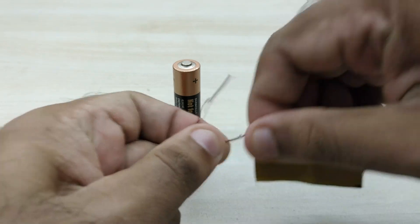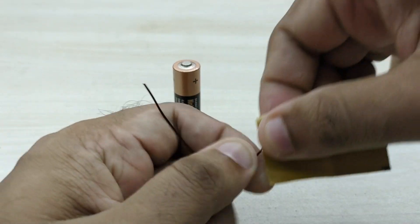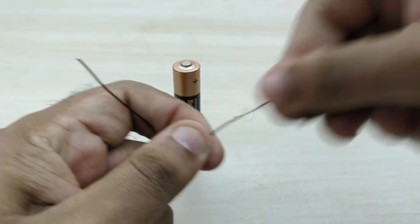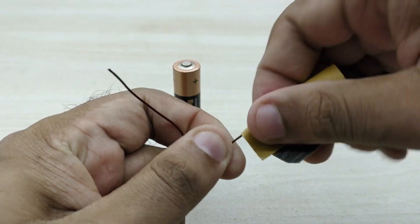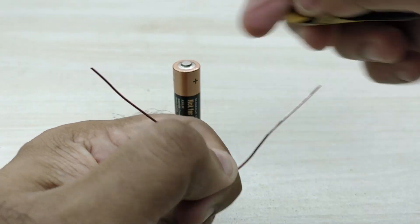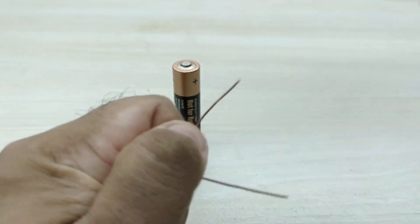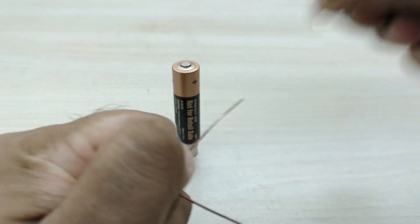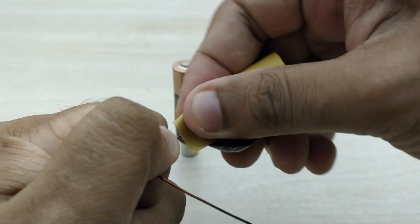Now, remove the insulation from both the ends of the copper wire also as shown. The insulation has to be removed thoroughly. This is required for the copper wire to make proper electrical contact for the working of the motor.